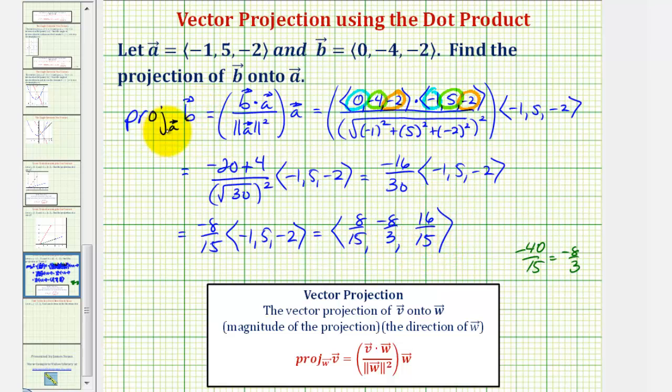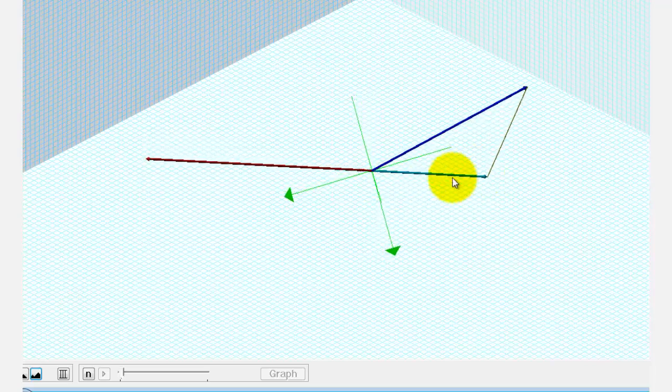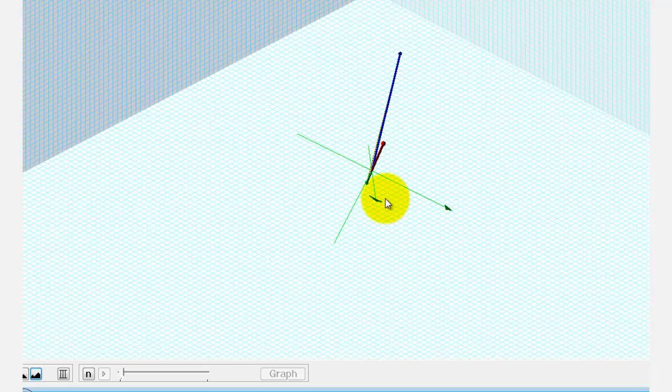This vector is the projection of vector B onto vector A. Again, going back to our graph just for a moment, this light green vector here is the projection of vector B onto vector A, which we just found.